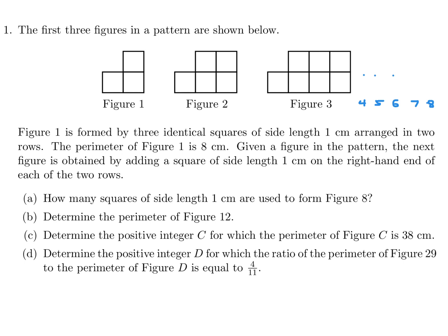So the number of squares here is 3. Here it's 5. Here it's 7. And as you can see, it's going up by 2 every time. So this will be 9, this will be 11, 13, 15, and 17. So Figure 8 will have 17 squares.